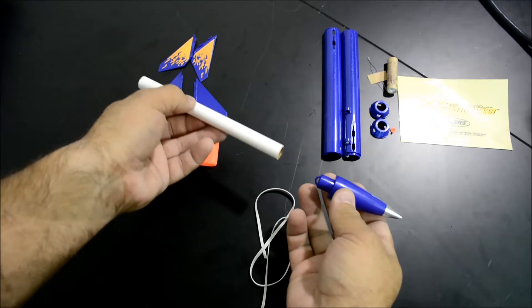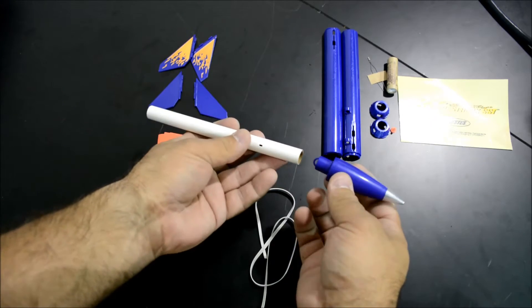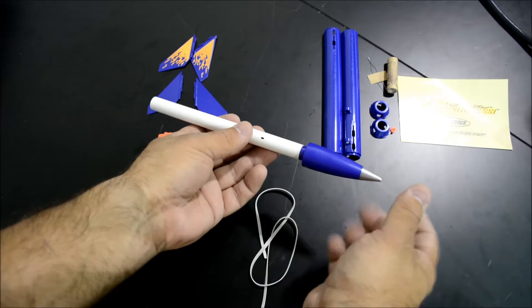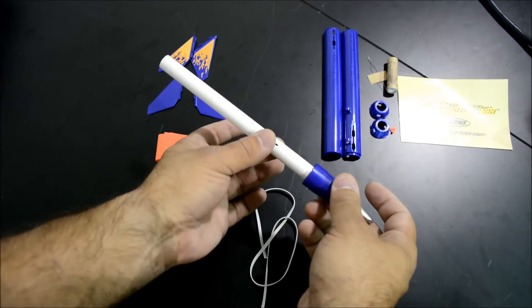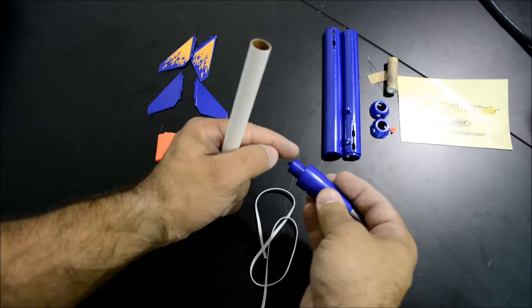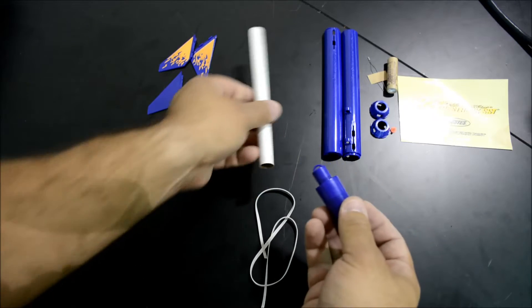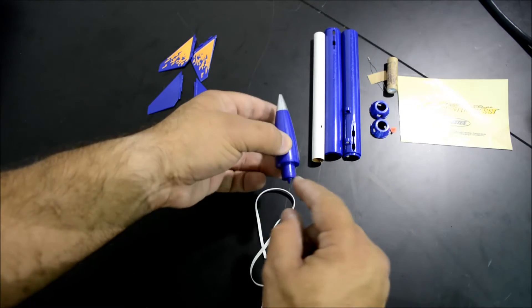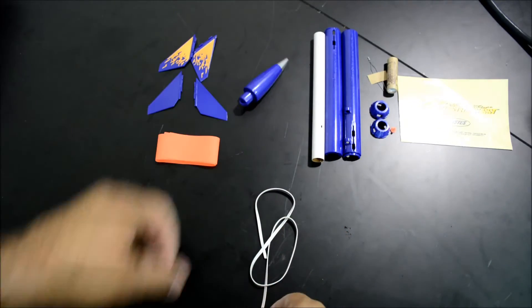Then take the cardboard tube and make sure you have a snug fit between the nose cone and the tube. If the fit's too tight, you can take some sandpaper and sand around the edge. If it's too loose, add a little bit of masking tape around the edge of the nose cone.